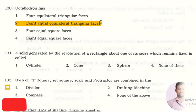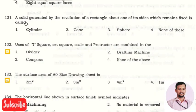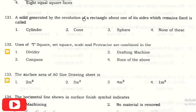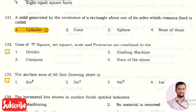The next question is: a solid generated by revolution of a rectangle about one of its sides which remains fixed is called? The right answer is cylinder, that is option one.